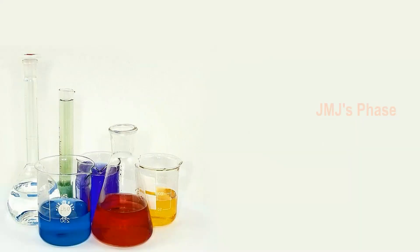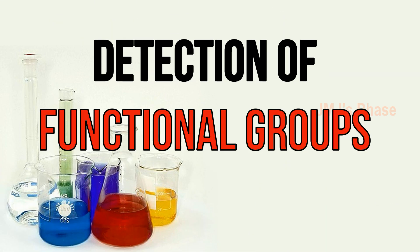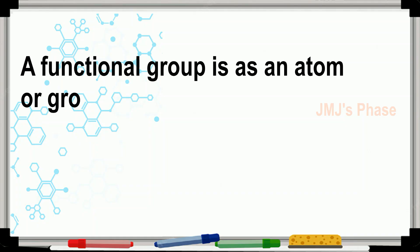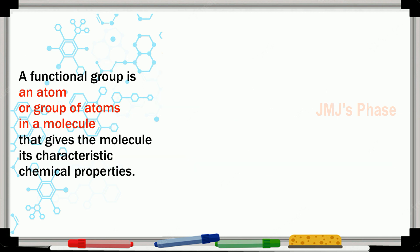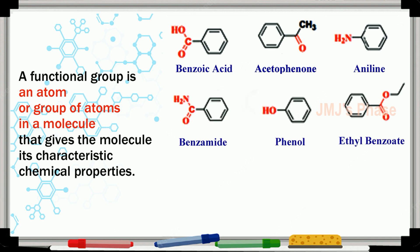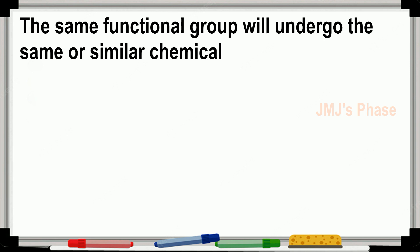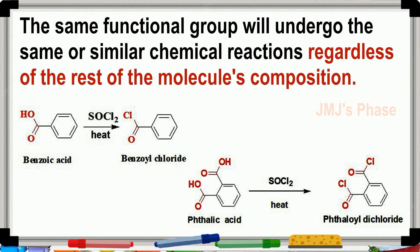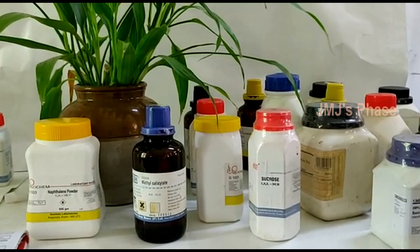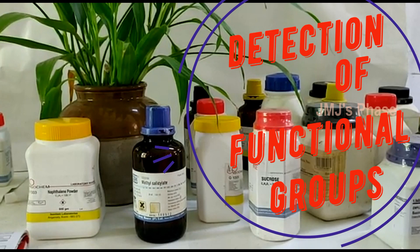Dear students, the fifth step in the analysis of organic compounds is the detection of functional groups, i.e., identification of functional groups present in the given organic compound. A functional group is an atom or group of atoms in a molecule that gives the molecule its characteristic chemical properties. The same functional group will undergo the same or similar chemical reactions regardless of the rest of the molecule's composition. Now let us see how to detect the functional groups present in the given organic compound.